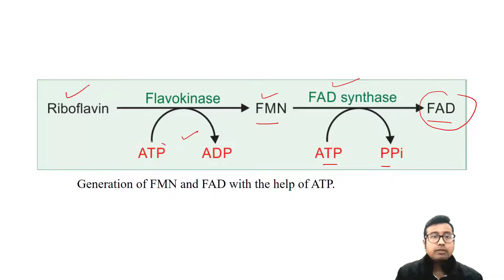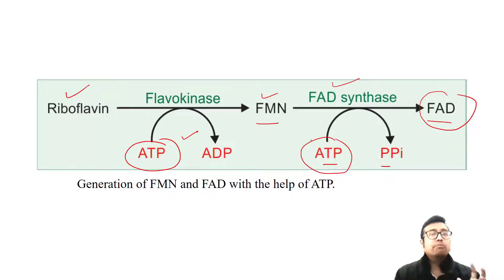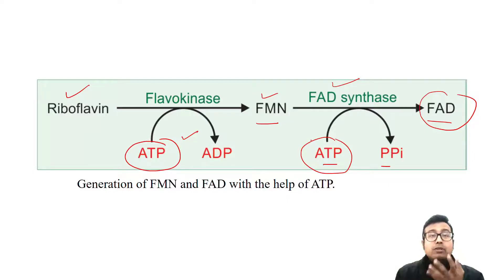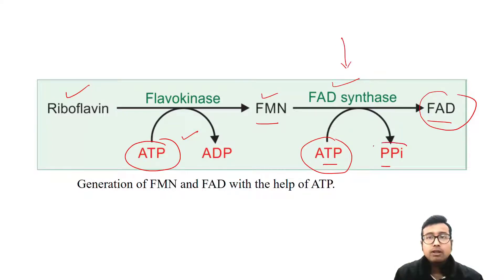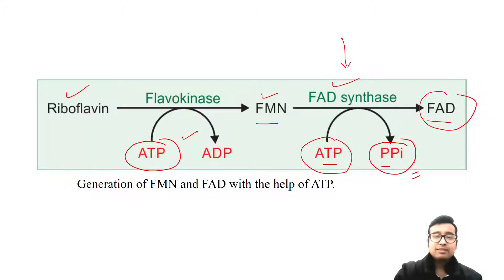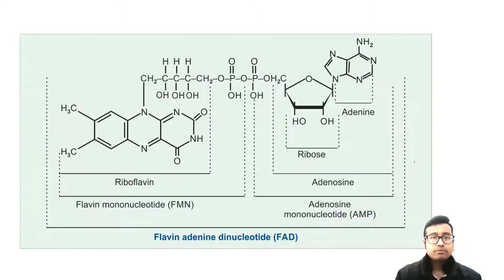Very important: both of these reactions need ATP. But seldom you will see ATP is used where the compound is not utilizing the high energy phosphate bond. This is one such example — ATP is used but the high energy phosphate bond remains intact in this pyrophosphate. This you need to remember.